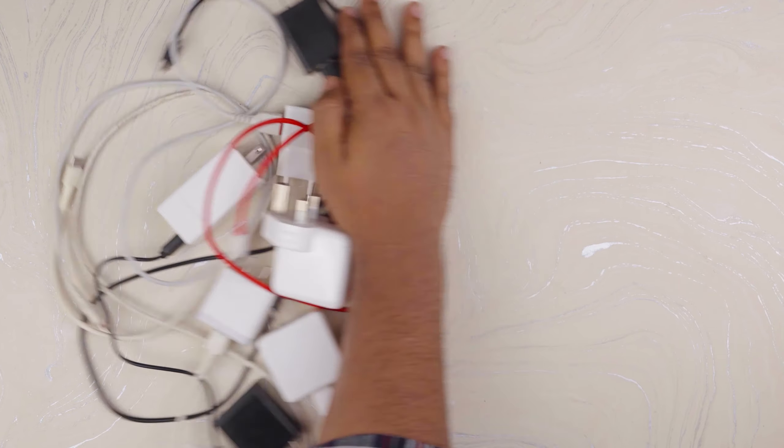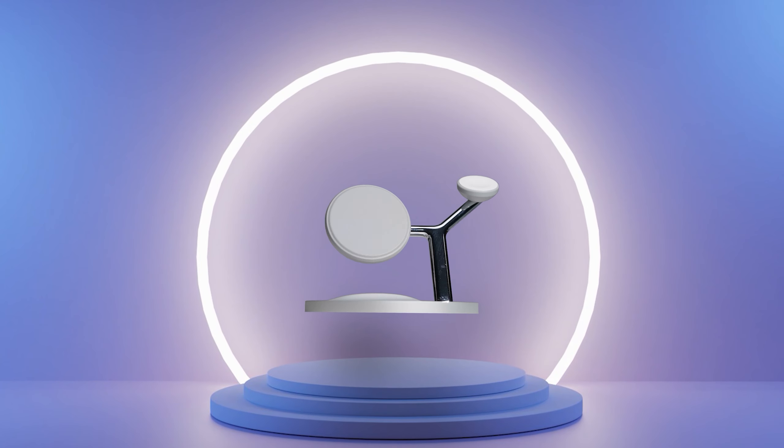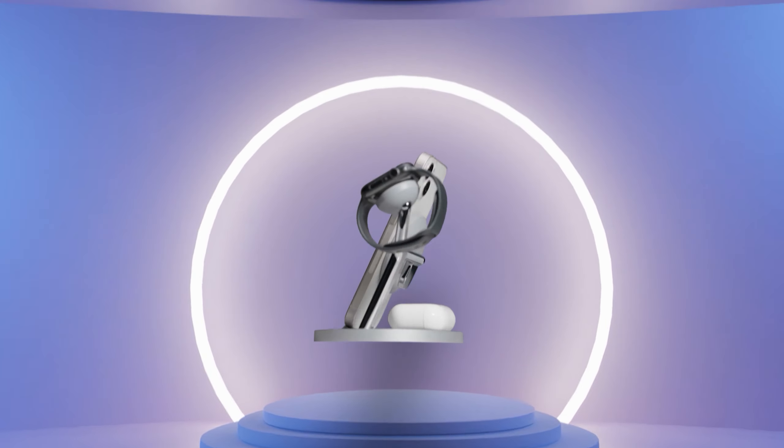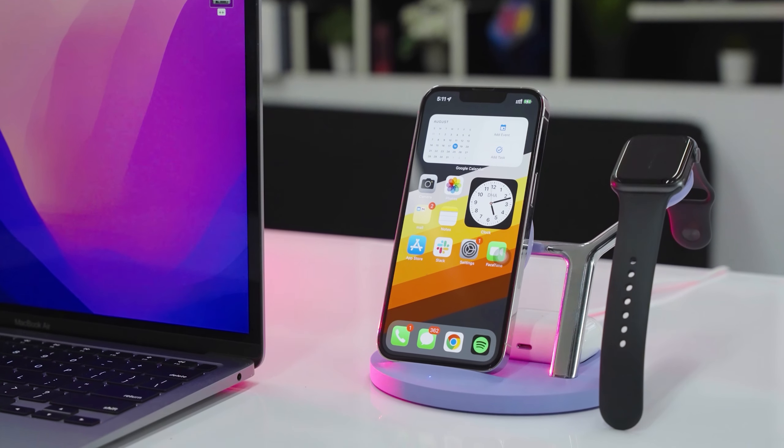Say goodbye to messy charging cables and keep the Zeechian Samba SE on your desk, a 3-in-1 charging station that can simultaneously charge 3 of your devices. This device has 3 wireless charging pads that make juicing up your gadgets extremely easy.